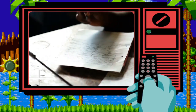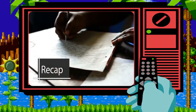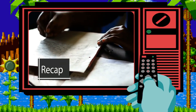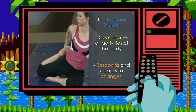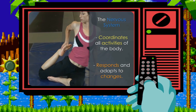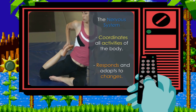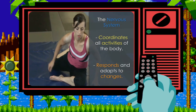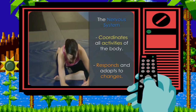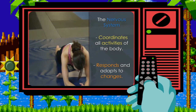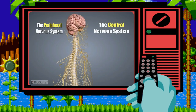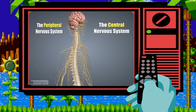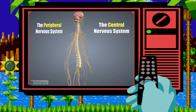Now let's do a quick recap. The basic purpose of the nervous system is to coordinate all the activities of the body. It enables the body to respond and adapt to changes that occur both inside and outside the body. The two major parts of the nervous system are the central nervous system and the peripheral nervous system.